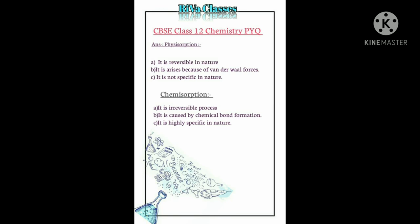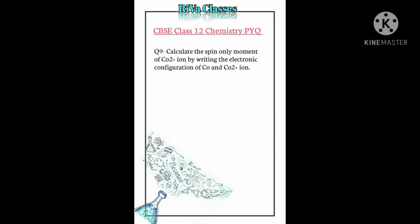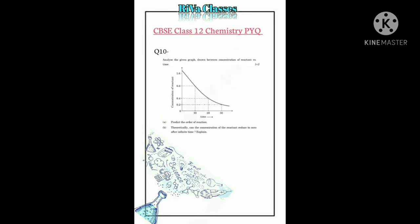Question number nine: Calculate the spin-only magnetic moment of Co²⁺ by writing the electronic configuration of cobalt and Co²⁺. The electronic configuration of cobalt and Co²⁺ is shown, and the spin magnetic moment of Co²⁺ is 3.92 BM.